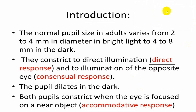In a normal person, pupil size is roughly 2 to 4 mm in bright light and 4 to 8 mm in darkness. When light falls on the retina, you get constriction of the pupil — that is the direct response. If light falls on the right eye and the left pupil constricts, that is called the consensual reflex or indirect reflex. So the pupil dilates in dark and constricts in bright light.